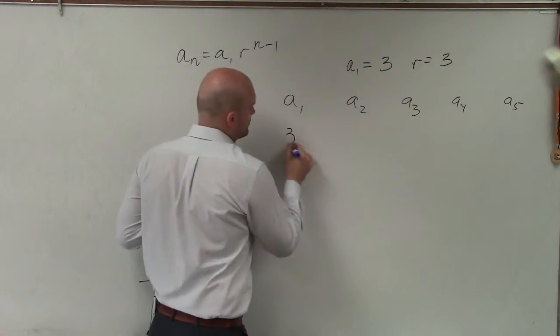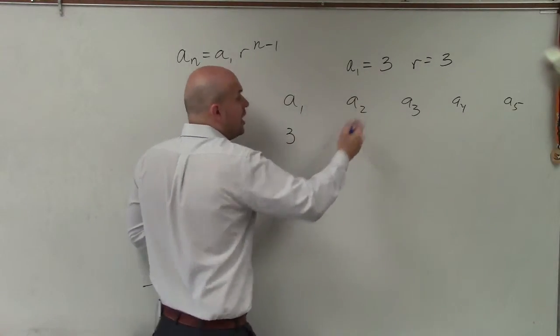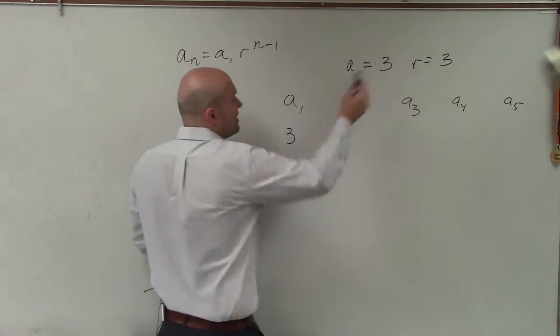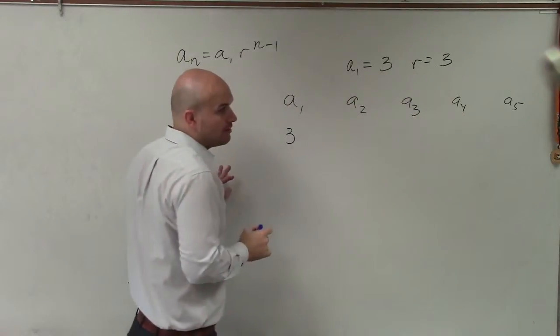So a1 is equal to 3. To determine a2, all I simply need to do is multiply a1 by my ratio 3.